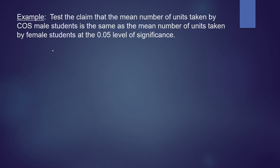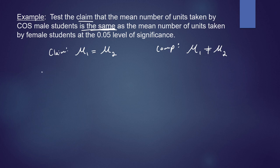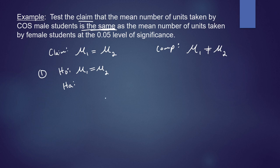Looking at the claim and its complement: the claim is that the mean of group 1 equals the mean of group 2. The complement is that μ1 is not equal to μ2. Step 1 — state the null and alternative hypothesis. The null hypothesis always has the equal sign, so H0: μ1 = μ2. The alternative hypothesis is the complement: HA: μ1 ≠ μ2. Step 2 — state alpha: α = 0.05.